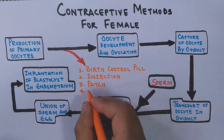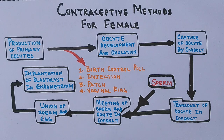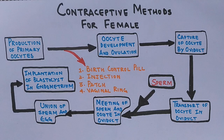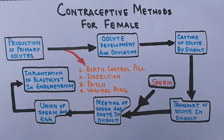The fourth method is the vaginal ring — a contraceptive vaginal ring. It is a small plastic ring a woman inserts into her vagina every month, and it releases hormones to stop ovulation, just like the contraceptive patch releases hormones to control or stop ovulation completely.